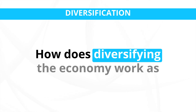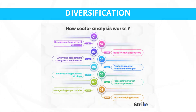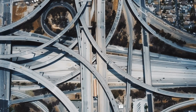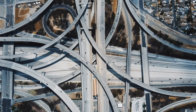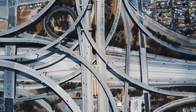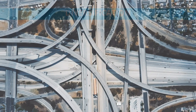How does diversifying the economy work as a solution to poverty? The process involves several steps. First, assessment and planning: identify existing industries, strengths, and weaknesses of the economy, and conduct research to determine the most promising sectors for diversification based on available resources and market opportunities. Second, investment in infrastructure: to support new industries, invest in transportation, communication networks, and energy supply.